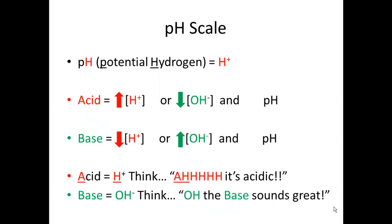Filling in the chart: acids have a high hydrogen ion concentration and therefore a low pH — they're inversely related. Bases have a low hydrogen ion concentration and therefore a high pH.